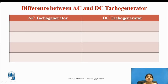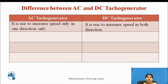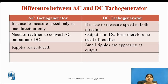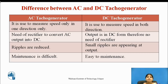In AC tachogenerator, speed is measured only in one direction, while in DC tachogenerator speed is measured in both directions. In AC tachogenerator, a rectifier is needed to convert AC output into DC, but in DC tachogenerator the output is already in DC form, so no rectifier is needed. Ripples are reduced in AC tachogenerator, while small ripples appear at the output in DC tachogenerator. Maintenance is difficult in AC tachogenerator but easy in DC tachogenerator.